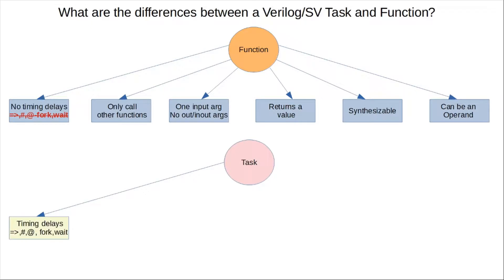On the other end, task. Unlike a function, a task can choose to consume time. A function, for instance, cannot have pound delays. However, a task can have pound delays, wait statements, fork joins, and fork join any for parallel operations.